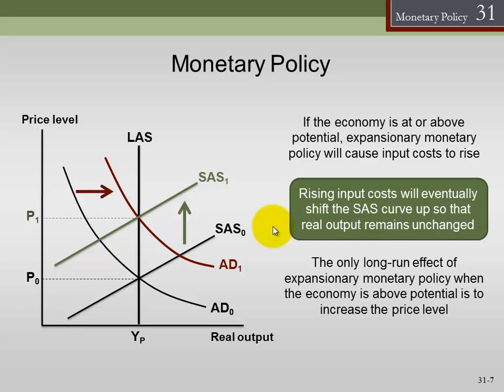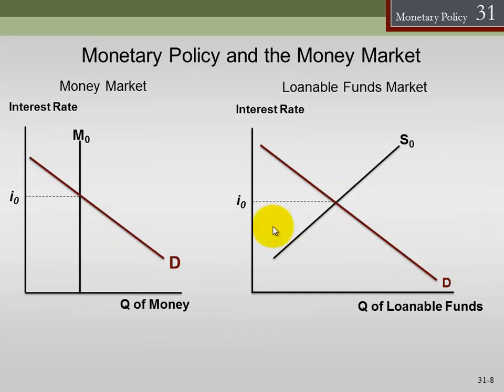In the long run, we have no effect on potential output — we only have an effect on the price level.